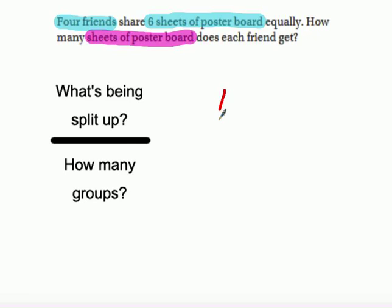So that means we're going to put the six on top. That's our numerator, or our dividend. How many groups is it being split into? Well, there's four friends sharing it, so it's being split into four equal pieces.